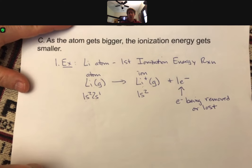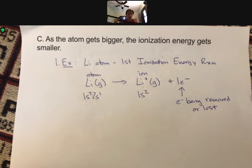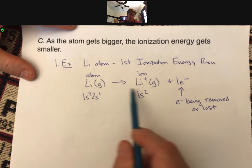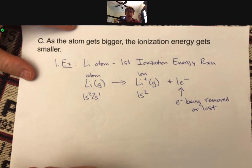we end up with 1s2 for the ionization energy here. So what you have to know is trends in ionization energy and how to write an ionization energy reaction.